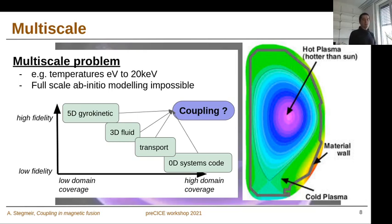This makes it clear that we have a multi-scale problem, because we span here in temperatures, which is a main parameter of our plasma, several orders of magnitude. Therefore, a full scale ab-initio modeling is at current state not possible because the models to run such a reactor are just too expensive. Instead, we rely on a hierarchy of models.